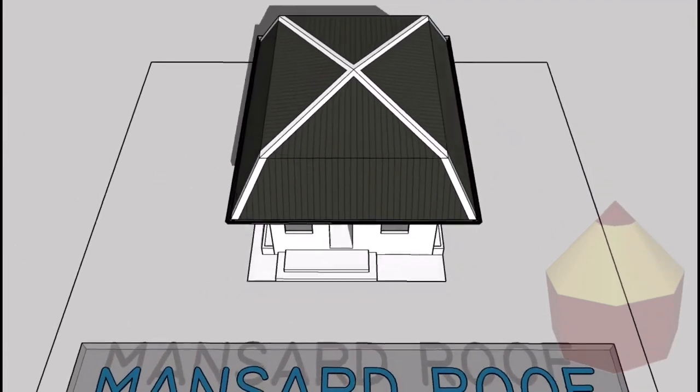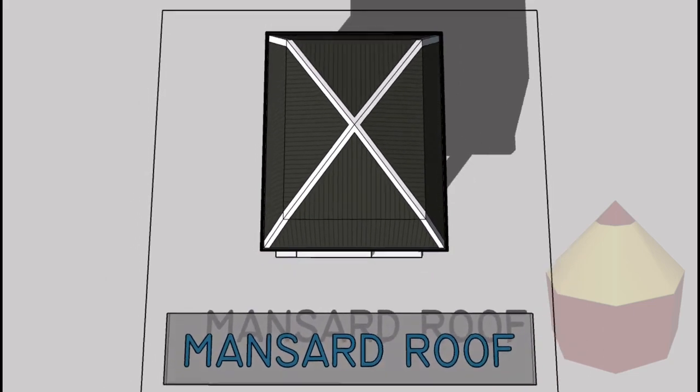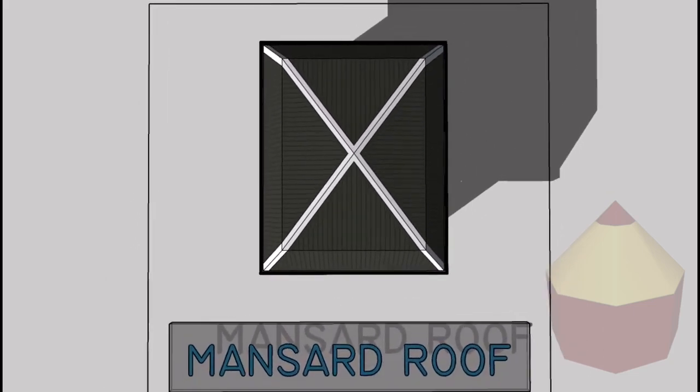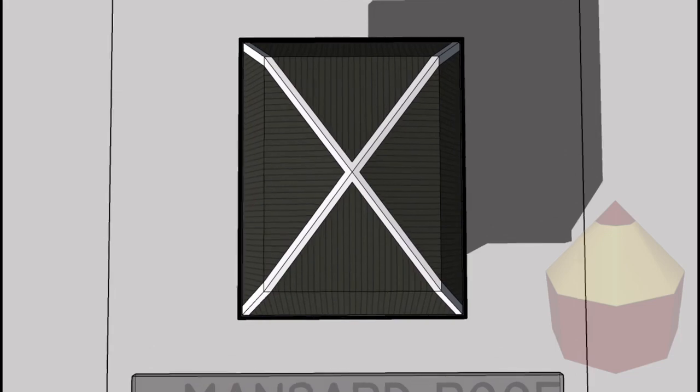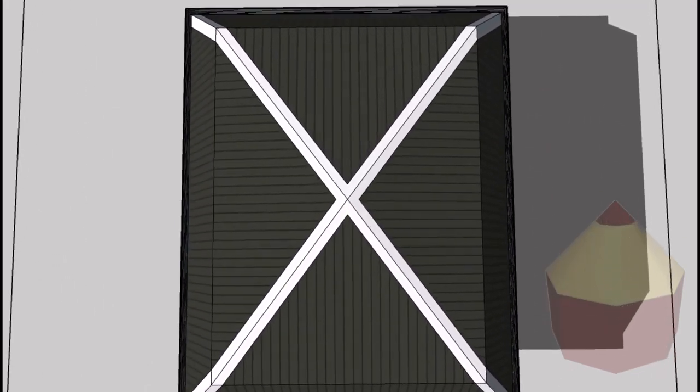Mansard roofs have a shallow top pitch that gives water and snow a place to pool. Because of this, these roofs are the least weather-resistant of all. They're also complicated and expensive to build.